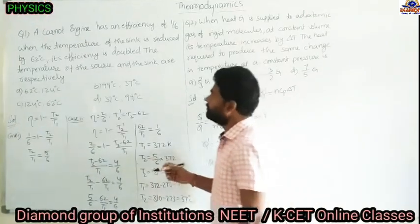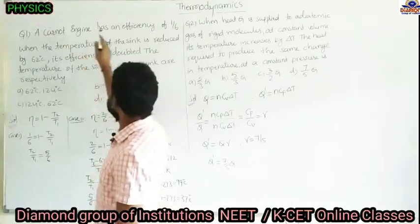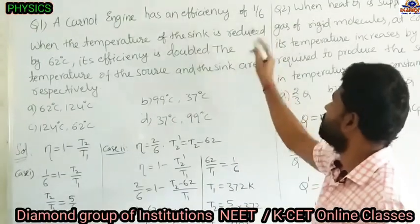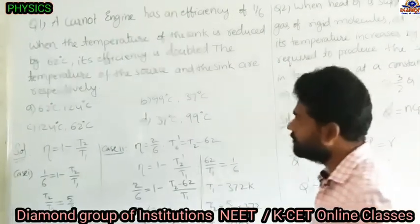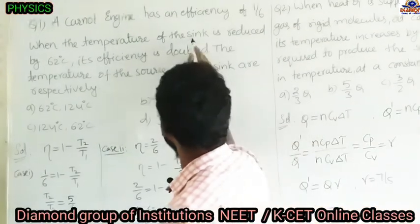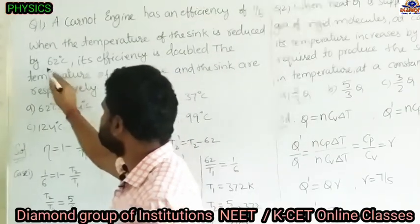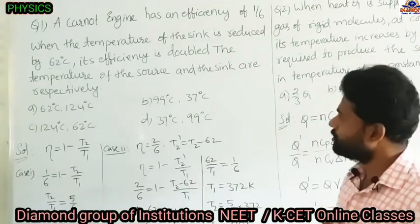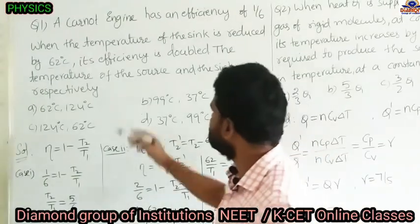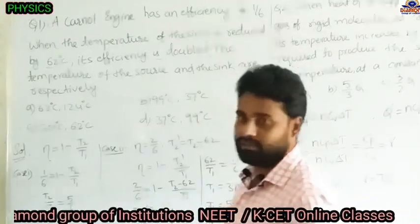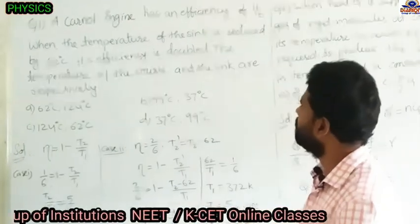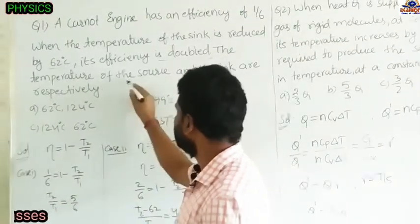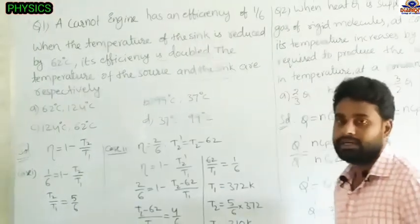See the first question: a Carnot engine has an efficiency of 1/6. When the temperature of the sink is reduced by 62 degrees centigrade, its efficiency is doubled. We have to find the temperatures of the source and sink.